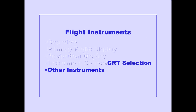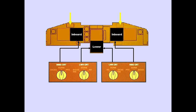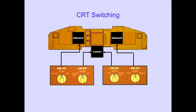Now let's discuss CRT, cathode ray tube, selection. There are six cathode ray tubes available for displaying various information. They are the outboard, inboard, upper, and lower CRTs. If a CRT fails, switching is provided to regain lost information. The CRT selectors are located above the CRTs. There is a selector for each inboard CRT and two selectors for the lower CRT. Let's examine each selector in detail, beginning with the inboard CRT selector.